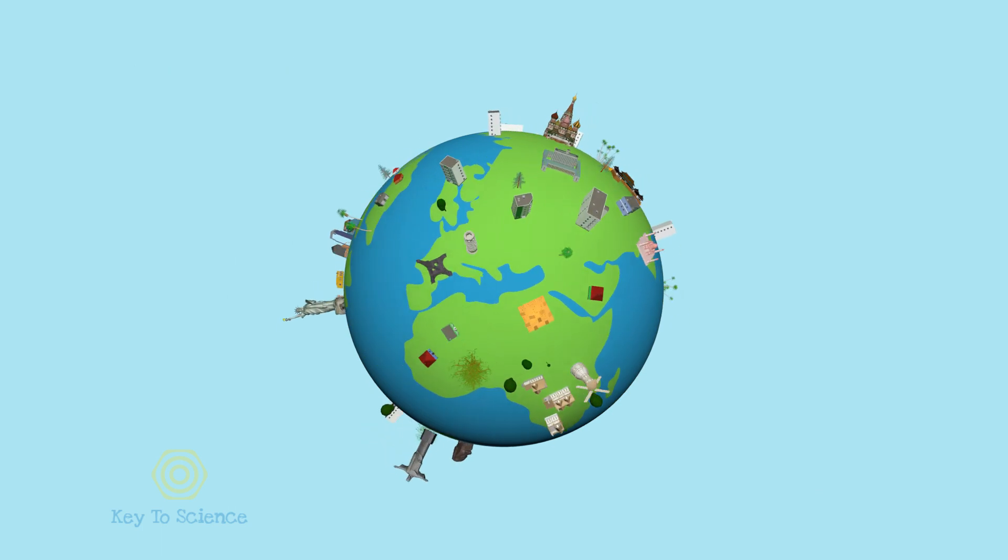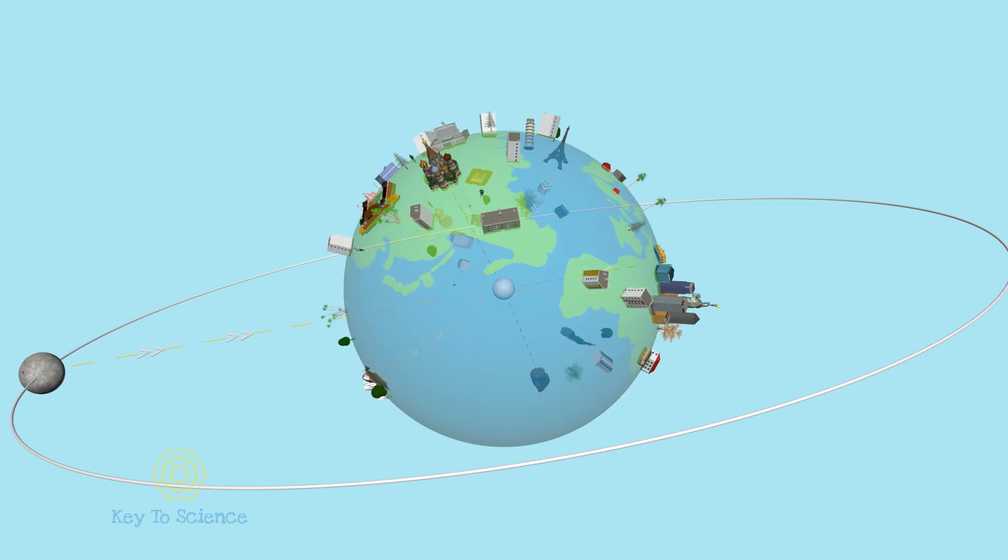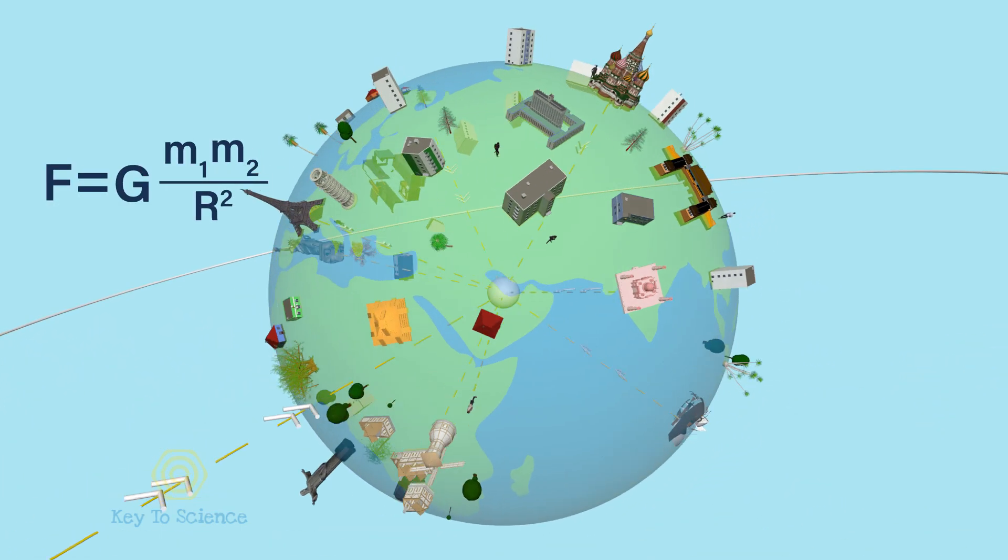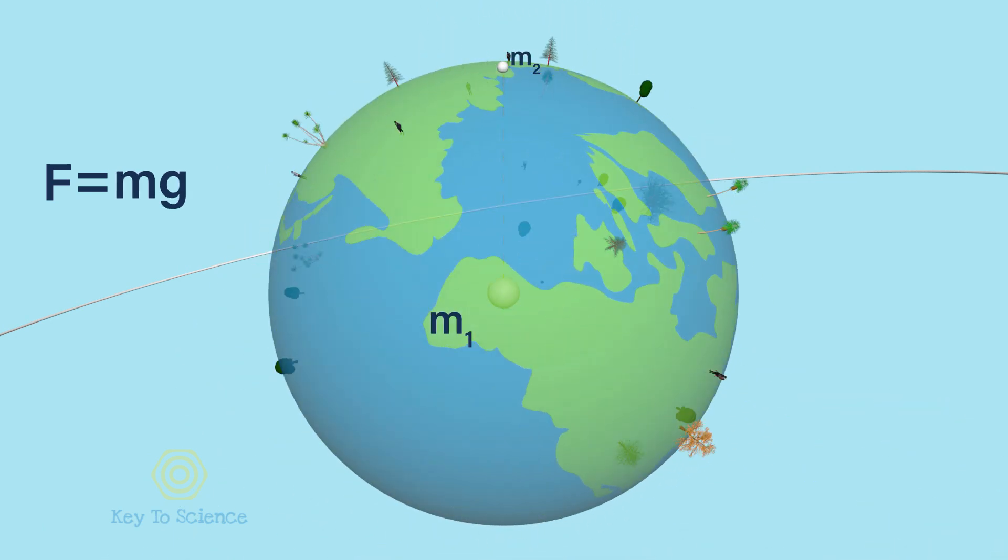We know that as a sphere, the Earth attracts things on and around it to the Earth's center. The value of gravitational force is highest on the Earth's surface. Therefore, gravitational acceleration, g, is highest.